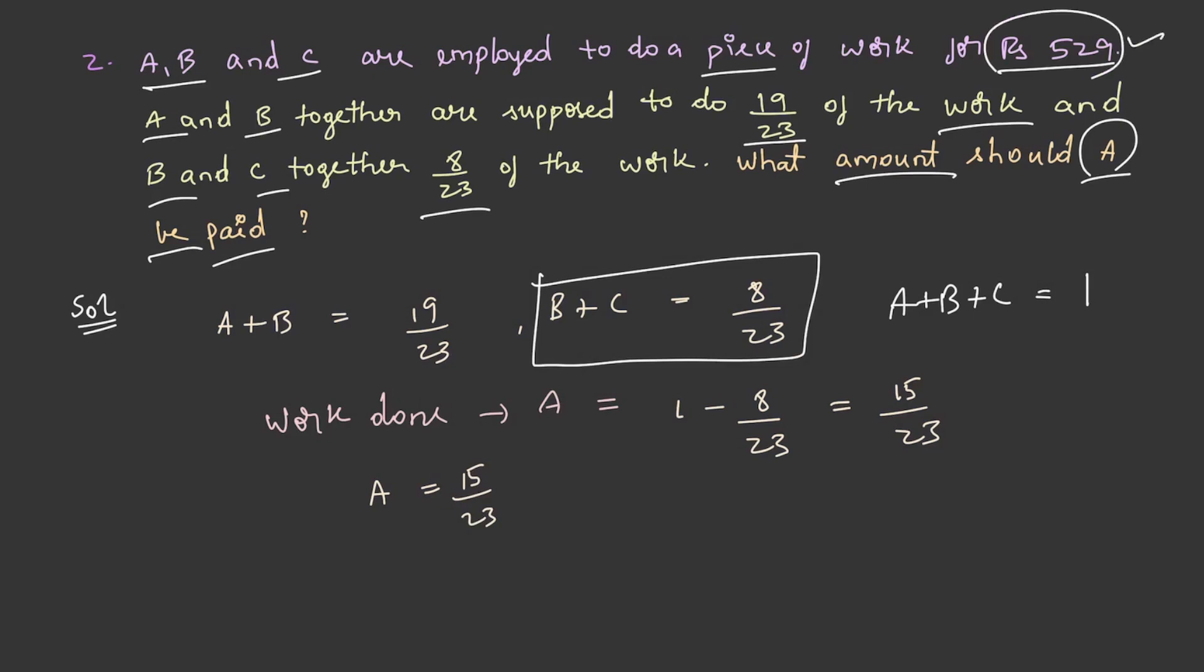From this amount we need to find out A's share. Therefore, A's share will be 15 by 23 into 529, and it is rupees 345. This is A's share. That is the end of time and work concept. Thank you.